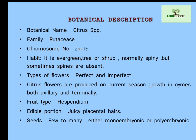Citrus flowers are produced on current season growth, both axillary and terminally. The fruit type present in citrus is hesperidium, which is a special type of berry. The edible portion of citrus is juicy placental hairs. Seeds of citrus range from few to many, and citrus species are either monoembryonic or polyembryonic.